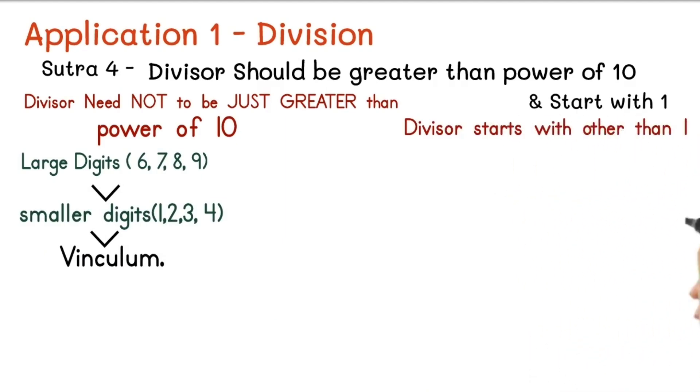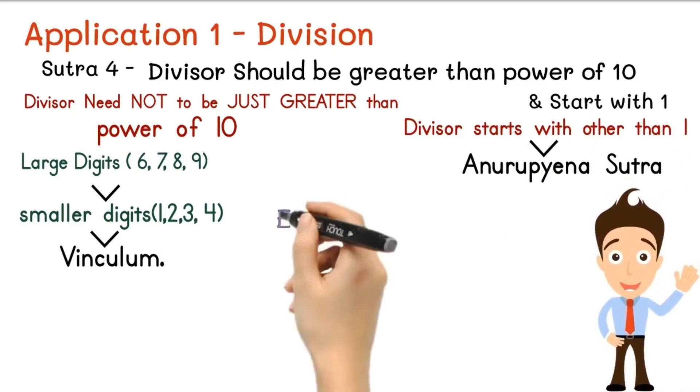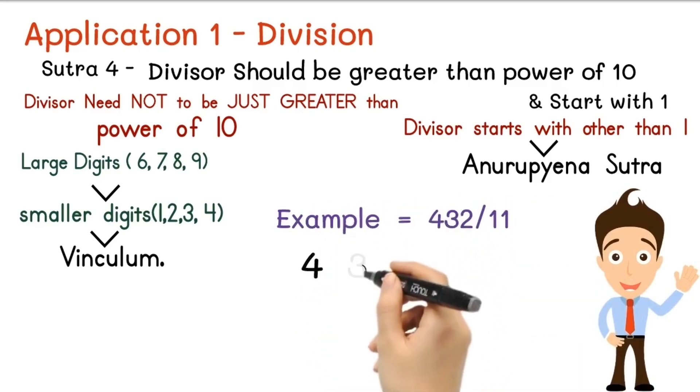Also, if you are getting divisor starts with other than one, then we can apply Anurupyena Sutra. So in this way, if the condition is not satisfied, then we have other methods in Vedic Maths. So let's take an example on Vedic Maths Sutra 4.